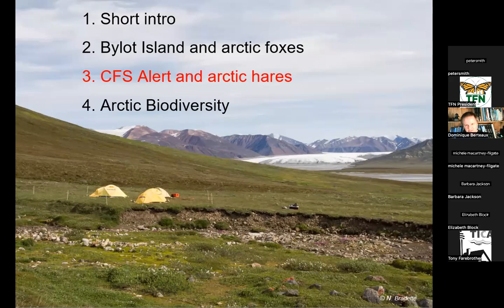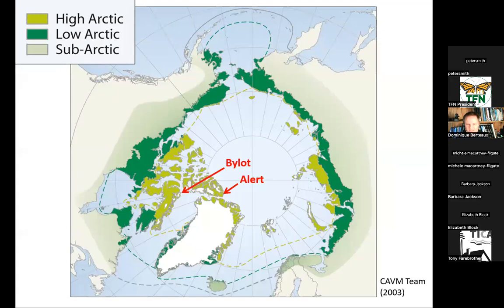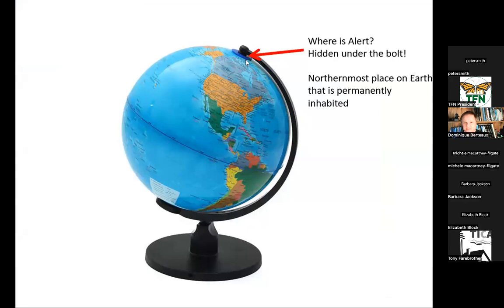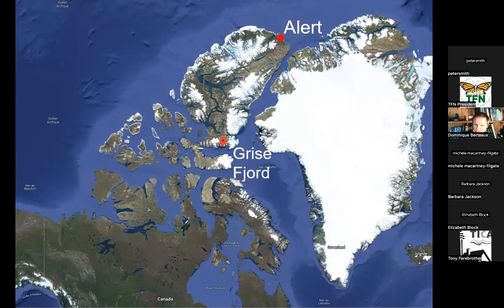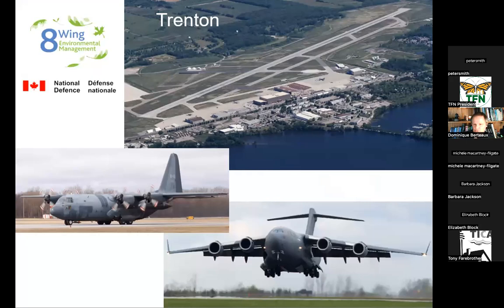Now I want to talk about arctic hares. Canadian Forces Station Alert is even further north than Bylot — very close to the North Pole. Nobody in Canada has been there except a few people — it's a military station. The closest Inuit village is Grise Fiord, 600 kilometers to the south. The only way to get there is with the military, so I drive to Trenton, east of Toronto, and fly with the military on their Hercules or C-17 Globe Masters.